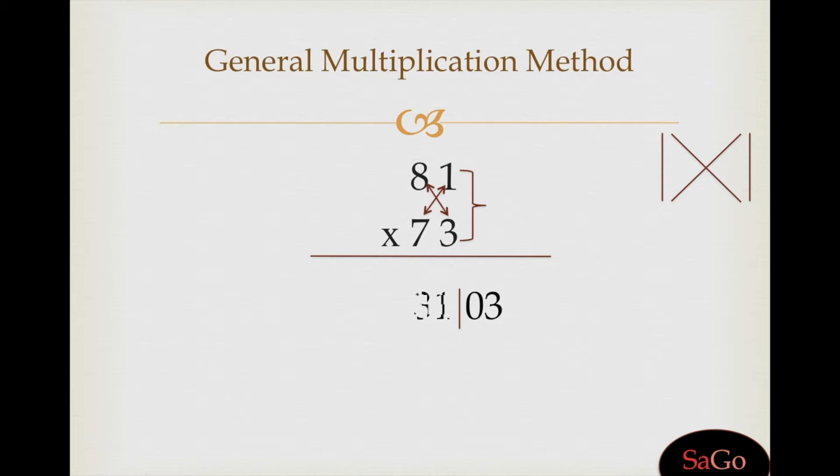Now adjust this equation: 3 as it is; 0 plus 1 is 1, write 1; 3 plus 6 is 9, write 9; and 5 as it is, 5. 5913 is the answer.